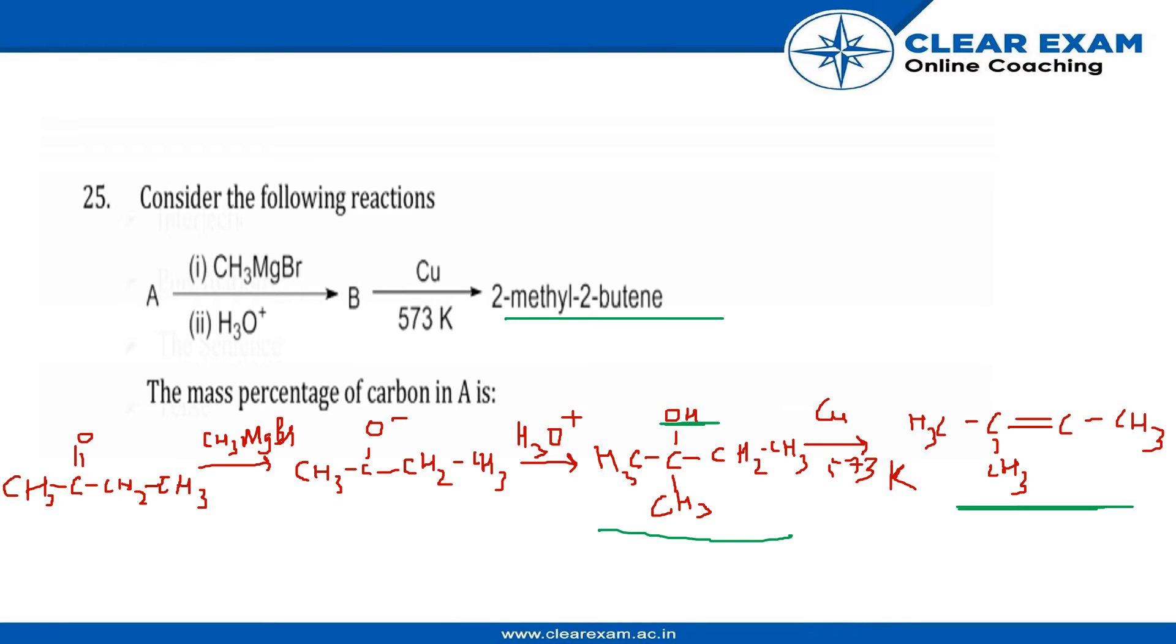Now Grignard's reagent must have introduced a negative charge here. So this is what it would have looked like before undergoing hydrolysis, and this would have been formed when A is attacked with Grignard's reagent.